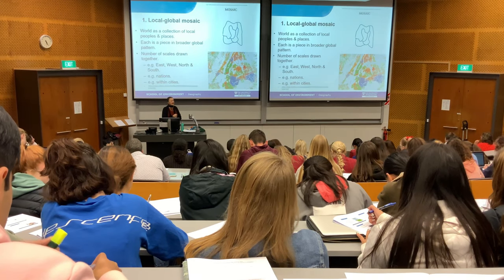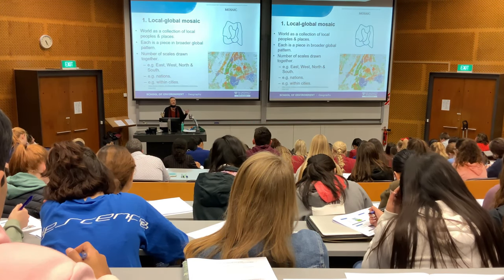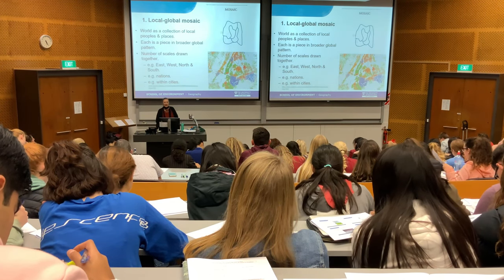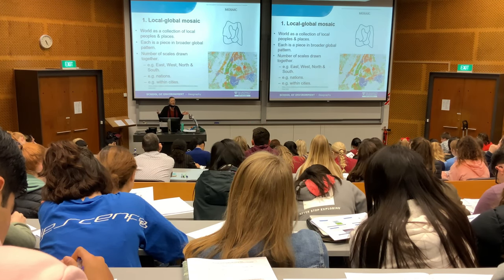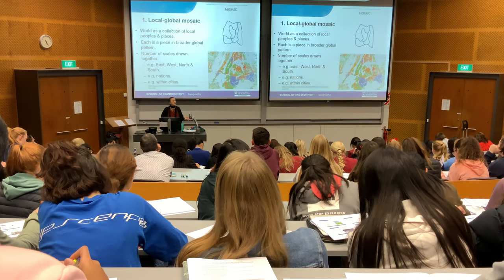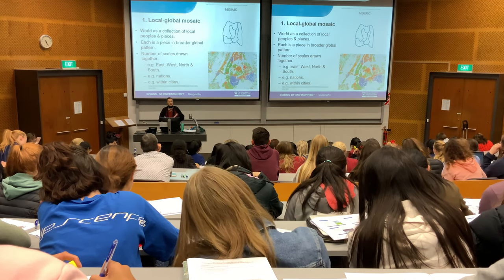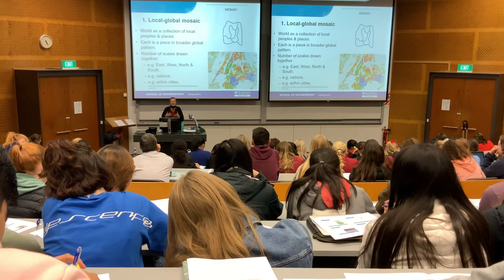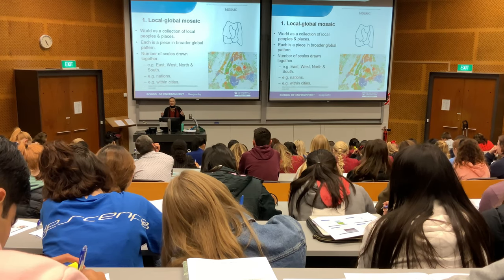Firstly, it's a mosaic. The world is a collection of different people in different places — the imagery is imagined as a mosaic where each piece is part of a wider pattern. Within Auckland you might talk about east, west, north and south. You might talk about different nations next to each other, or within cities, different characteristics of different parts of the city.